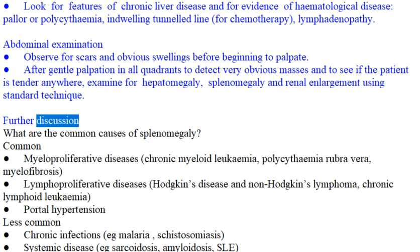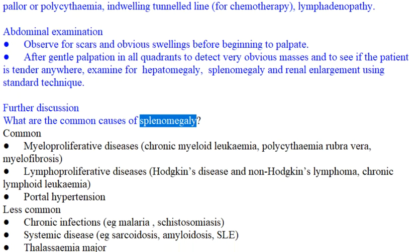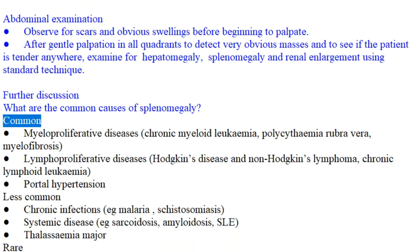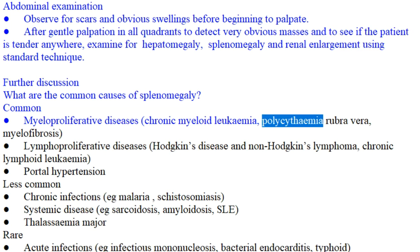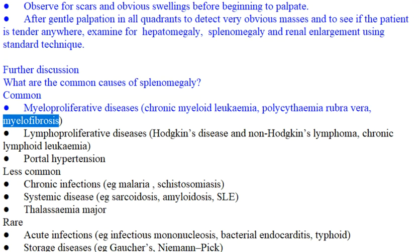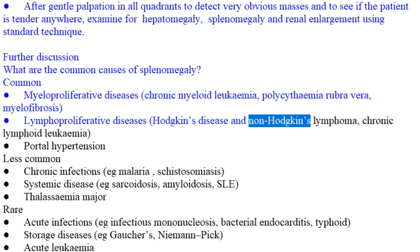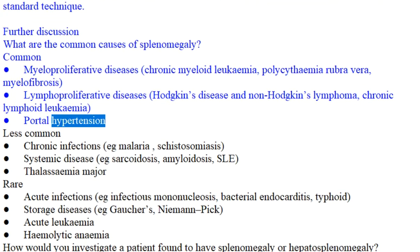What are the common causes of splenomegaly? Common causes include myeloproliferative diseases such as chronic myeloid leukemia, polycythemia rubra vera, and myelofibrosis; lymphoproliferative diseases including Hodgkin's disease, non-Hodgkin's lymphoma, and chronic lymphoid leukemia; and portal hypertension.